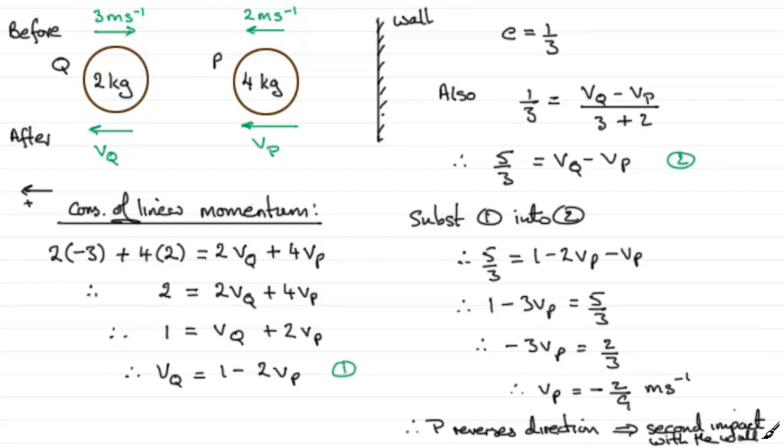So hope that's given you some idea then how you can go about that. Do experiment with this question. Change the directions, as I said. Change possibly the sense. Do your equations again and figure out then what happens to VP. You should always find that it reverses direction and heads back towards the wall. So good luck with that. And that brings us now to the end of this question.